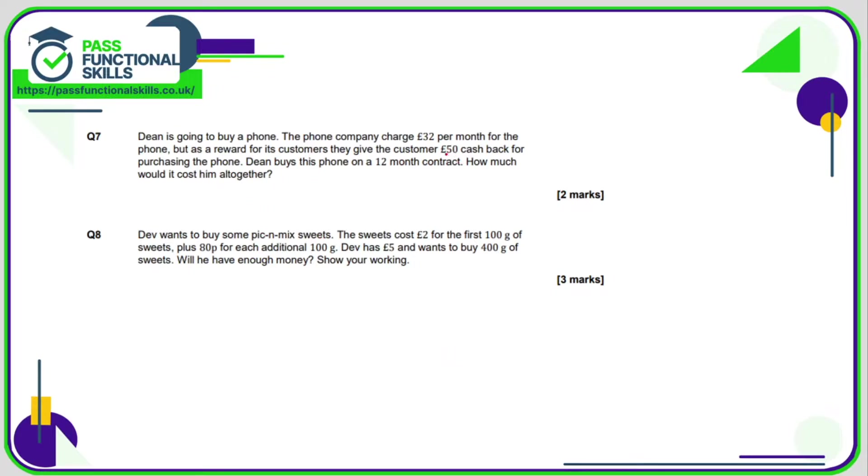Question number seven: here it's cash back, so we're going to work out the price and then deduct £50 from it. If it's £32 per month, a 12-month contract is going to be 12 lots of £32. Twelve times £32 is £384, and then after the cash back take away £50—that's going to work out as £334.